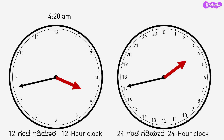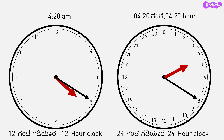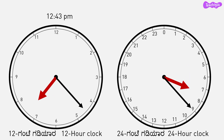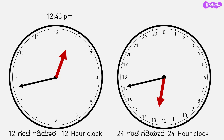4:20 a.m. will be 04:20 hours. The minute hand in the 24 hour clock is at 8, meaning 2.5 times 8 is 20 minutes past 4. 12:43 p.m. will be 12:43 hours — it is 43 minutes more than 12. The hour hand would have crossed 12 in both clocks.